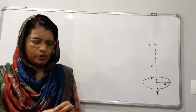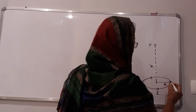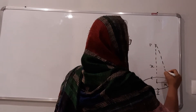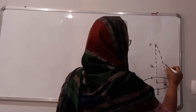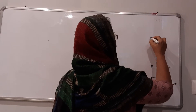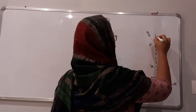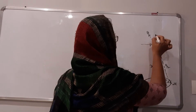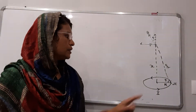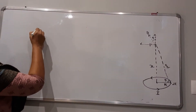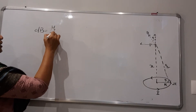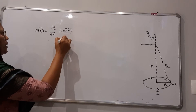To find that using Biot-Savart's Law, we consider a small element — a small segment DL at a point on the loop. The distance to point P is r, and the angle made by this length with the radius is theta. According to Biot-Savart's Law, the magnetic field density due to this small portion is DB = μ₀/4π · I·DL·sinθ / r².